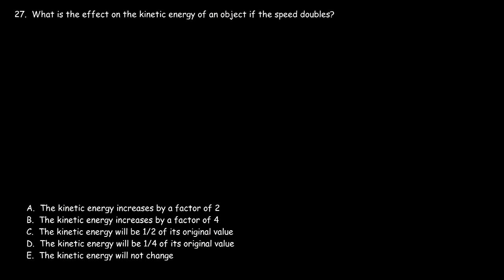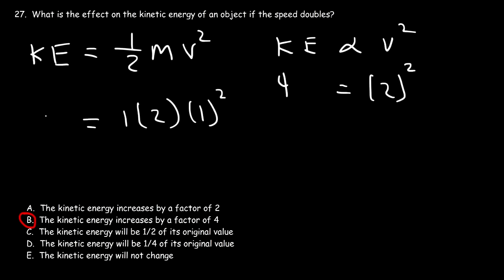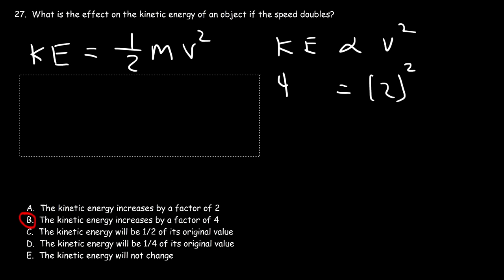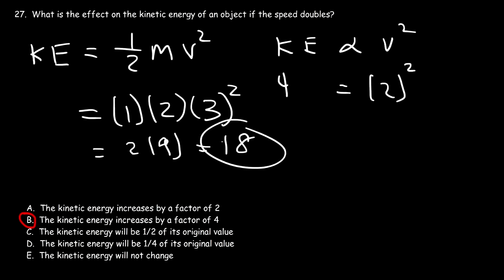Number 27: what is the effect on kinetic energy if the speed doubles? Kinetic energy = ½mv². Since KE is proportional to v², doubling the speed multiplies KE by 2² = 4. Answer B. If you also doubled the mass, KE would double; if you doubled the mass and tripled the speed, KE increases by a factor of 2 × 3² = 18.